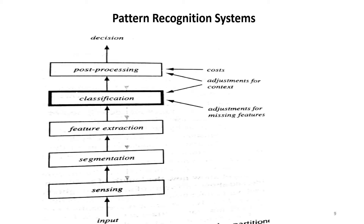Next is the block diagram of a pattern recognition system. The input is applied to the system, then comes sensing, segmentation, feature extraction, classification, post-processing, and finally we get the decision.